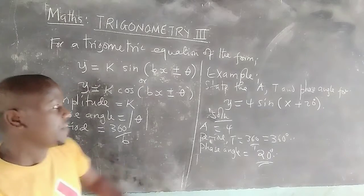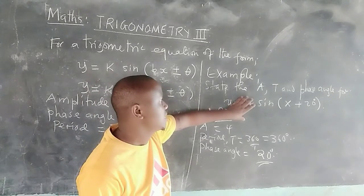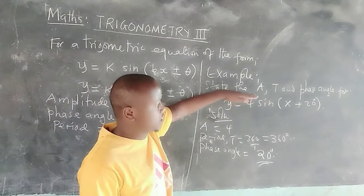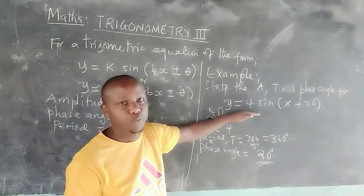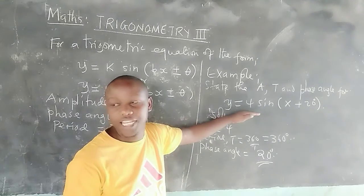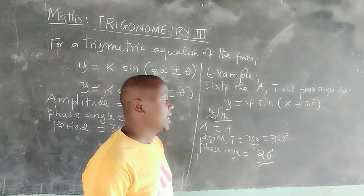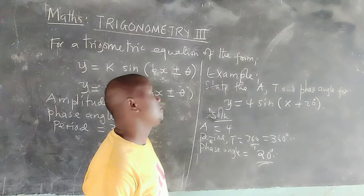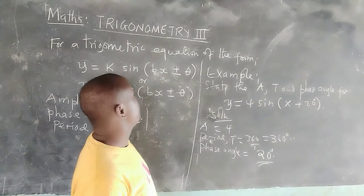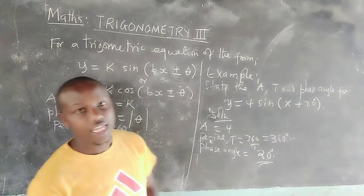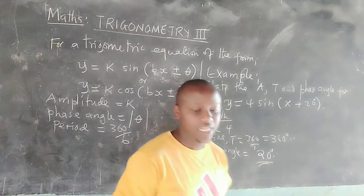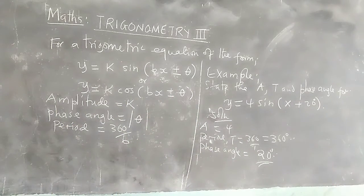That is how we extract these quantities — amplitude, period, and phase angle — from an expression of this nature. Now we can look at an example of solving a trigonometric equation.